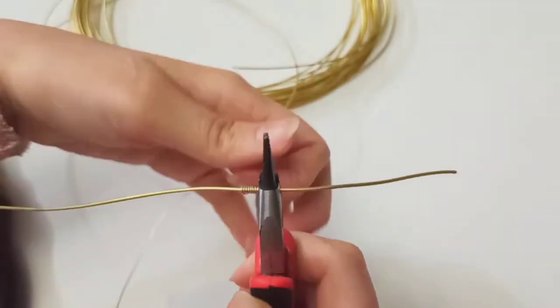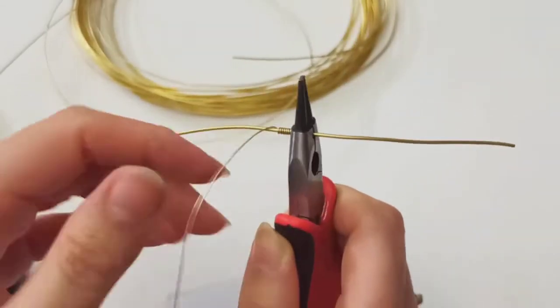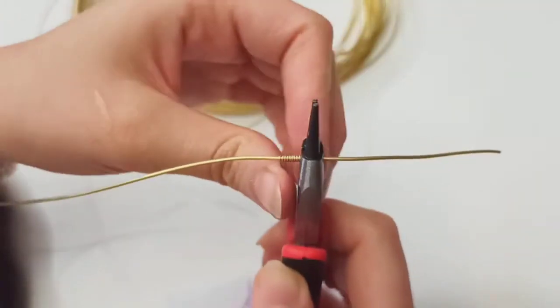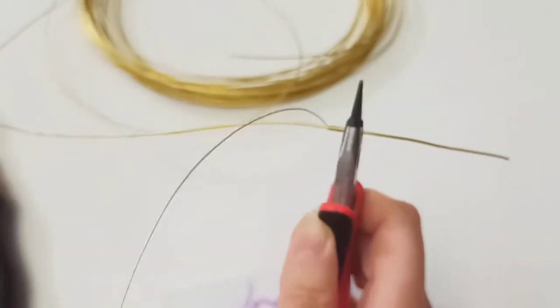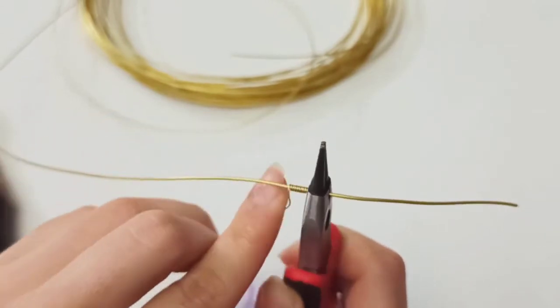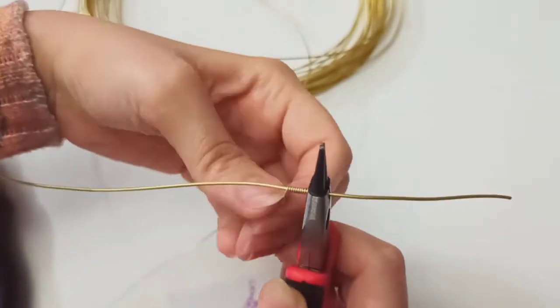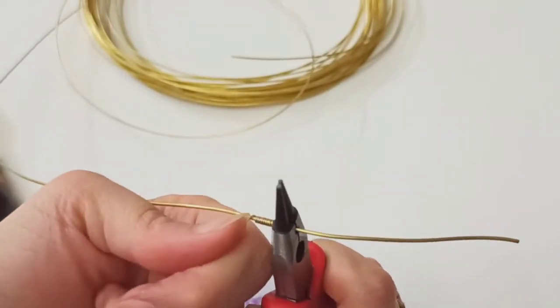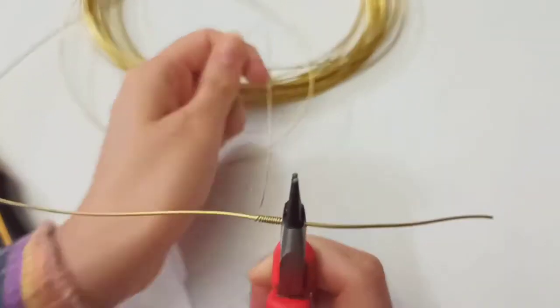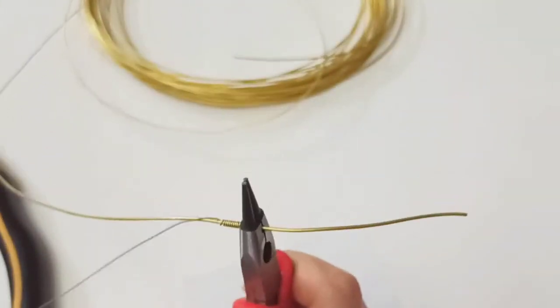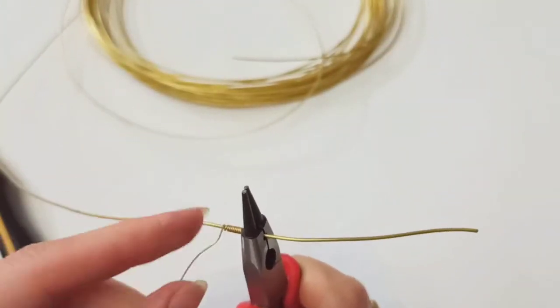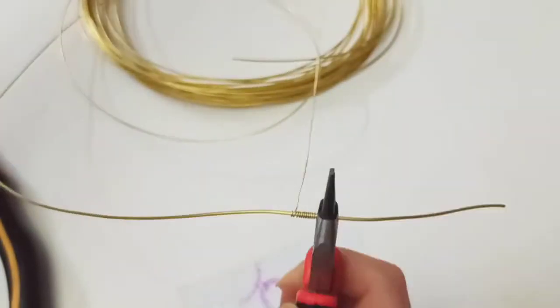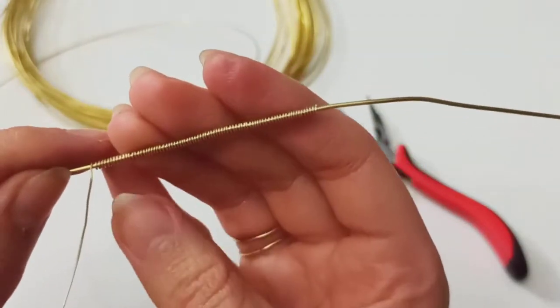To better do this part, you could fix it with your tool, your chain nose pliers, and then start to wrap it all around the main structure. Every time that you're knitting the wire, just fasten it up with pushing with your nails, your index and thumb nail.